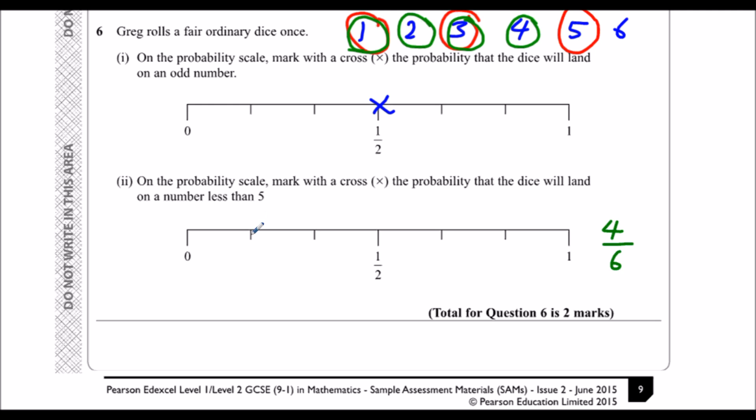So there's one, two, three, there's four out of six.